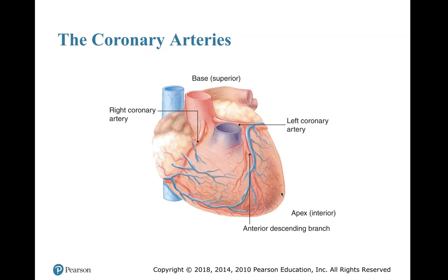Here's a diagram of the coronary arteries. You see the right and left coronary artery and the anterior descending branch, with veins bringing blood back. It delivers oxygenated blood to the cells, and the cells give off waste and carbon dioxide, which needs to go back to the heart.